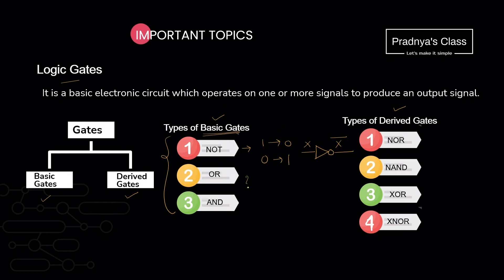OR works on two or more input signals. If any one input is 1, then the output will be 1 in case of OR gate. The symbol used to represent OR gate — we can remember it like a lotus petal. It takes minimum two inputs and produces a single output. If we are taking variables x and y as input, the output we will write as x plus y.